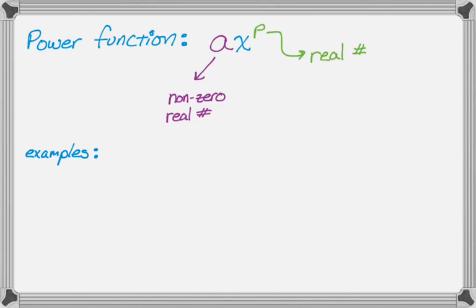So let's look at some examples. So here's a basic one, 5 times x to the 14th. That one you would notice right away.